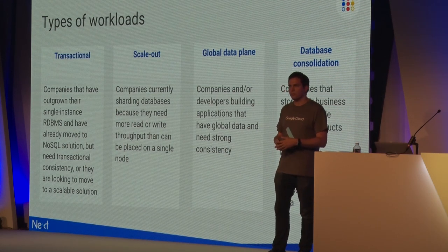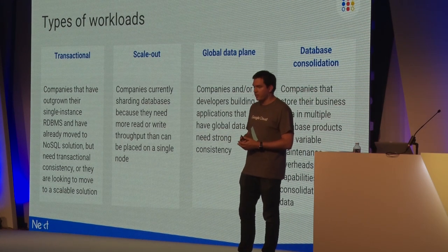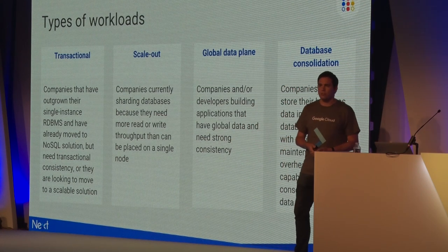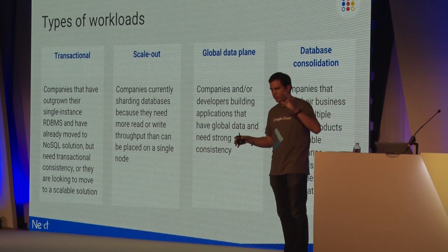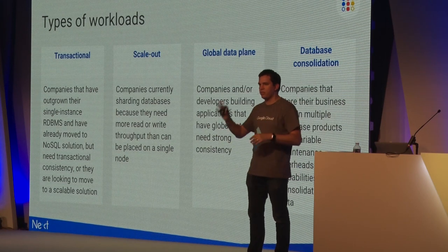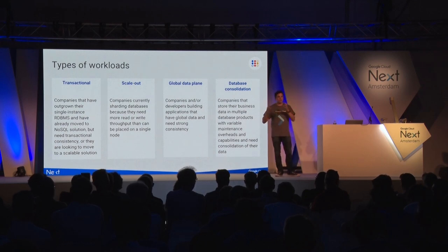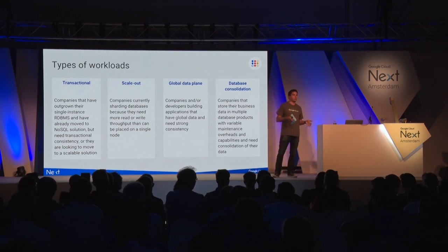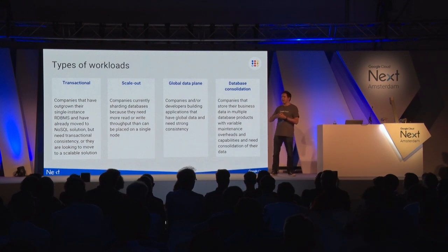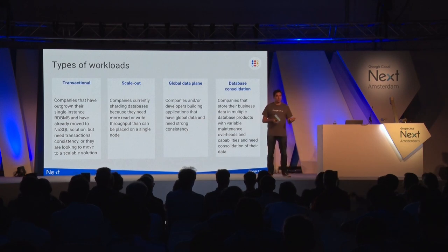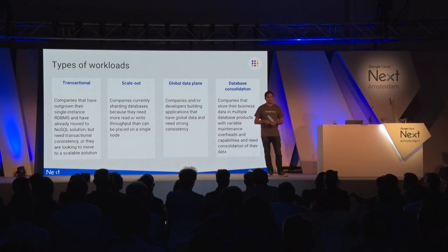Third - and very common at Google - is the global data plane. If you've got a global user base in the US, Europe, and Asia all logging into the same application, you might be sharding geographically, keeping a database in each of those three regions. When a user logs in, you've got to figure out how to send them to the right home. You need some sort of meta-database to know where to go, but two groups of people end up with high latency. You can solve this by using Spanner as a global database with much lower read latency.